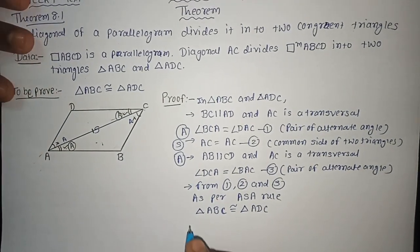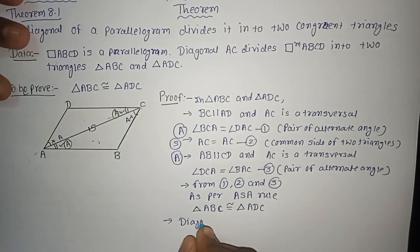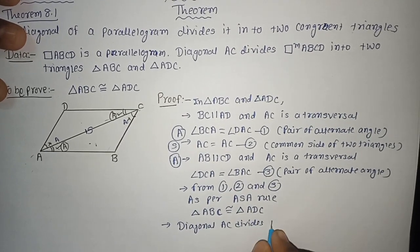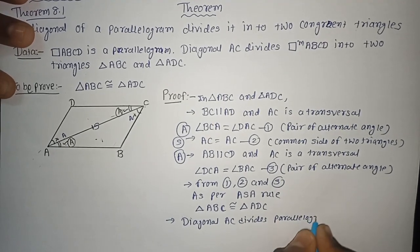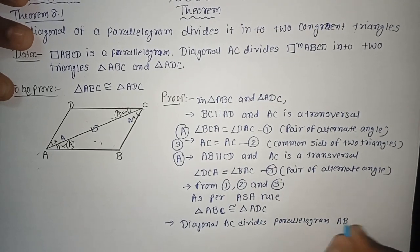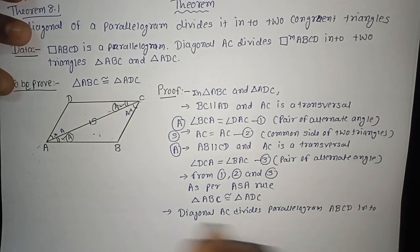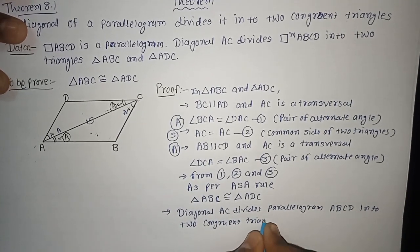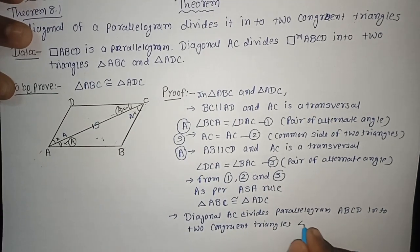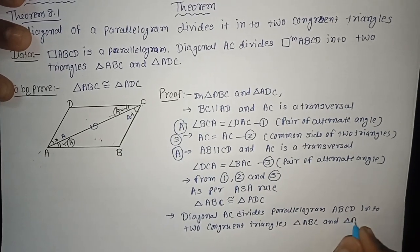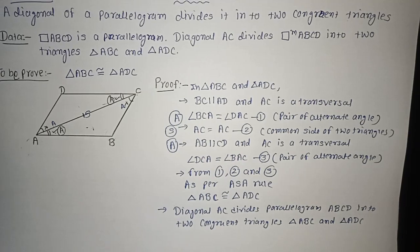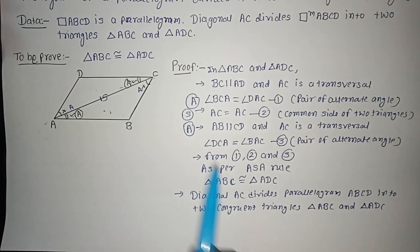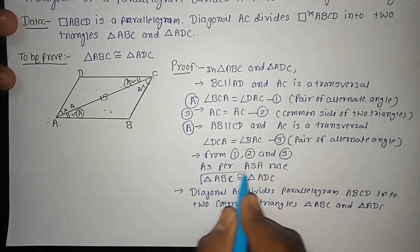So ultimately we write: Diagonal AC divides parallelogram ABCD into two congruent triangles — proved. I hope it is very easy. Students, learn it very well. It is an important theorem for exam perspective as well. It is very simple — you only need to implement the ASA rule and you can directly prove that both these triangles are congruent triangles.